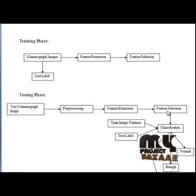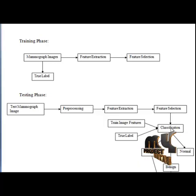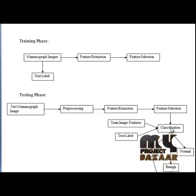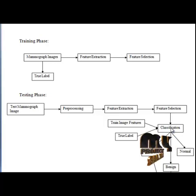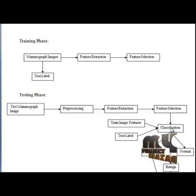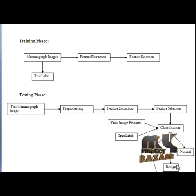For feature selection, we are using the DEFS feature selection algorithm. After feature selection, we pass the values into the classification process. Classification is done using the KNN classifier. In pattern recognition, the KNN classifier is a nonparametric method for classifying objects based on the closest training samples in the feature space. The KNN classifier compares values with neighboring values and classifies the mammogram images into malignant, normal, or a benign stage.